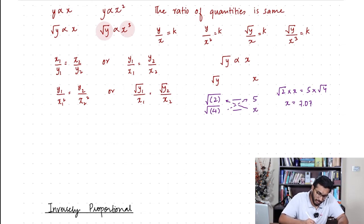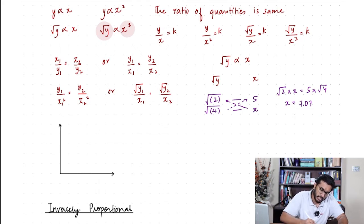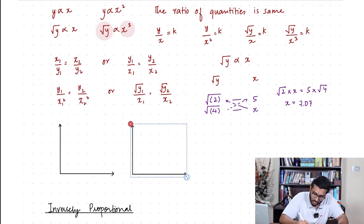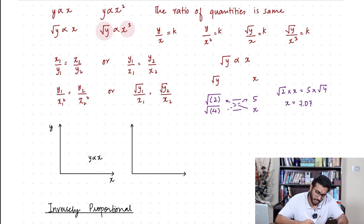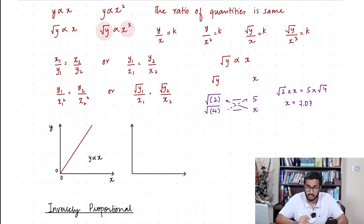One more important thing about two quantities being directly proportional is that whenever you draw a graph of these quantities, it is going to be a straight line graph — and not just any straight line graph, but one passing through the origin. For example, if I draw a graph of y against x and y is directly proportional to x, the graph is going to be a straight line passing through the origin. It can have a different gradient, but it must pass through the origin.